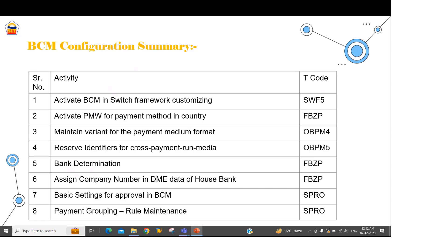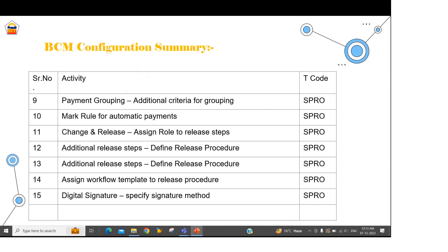The last and most important area is BCM itself. Under that, we will be creating the rules for merging payments so that batches are created accordingly, then maintaining the payment approval workflow by defining first level and final level approvers, and at the last adding the digital signature through which the batch will be approved and the system will generate the payment file to send to the bank.